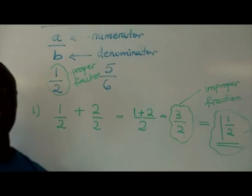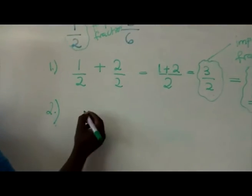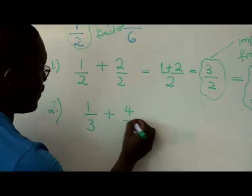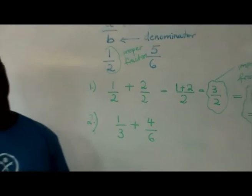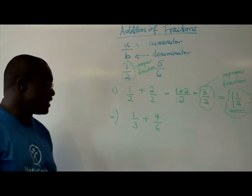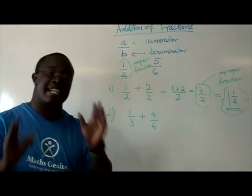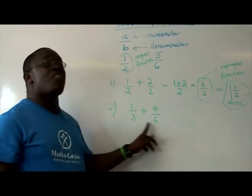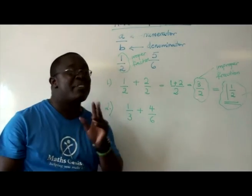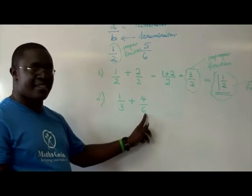What about if the denominators are different? For example, example number 2, 1 over 3 plus 4 over 6. Now you've got a situation where you've got 1 third plus 4 sixths. The only way you can add two fractions is if their denominators are the same.